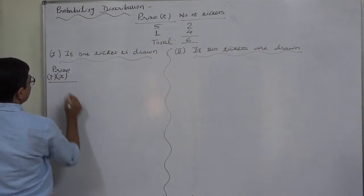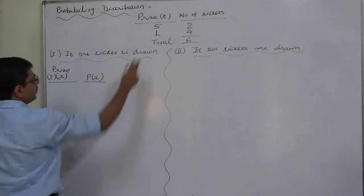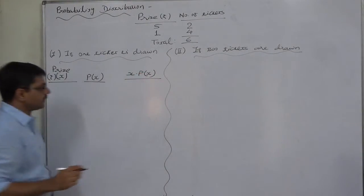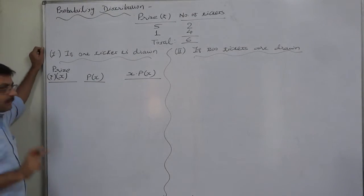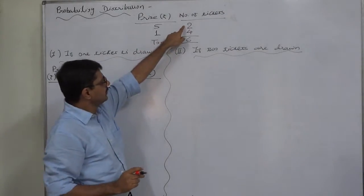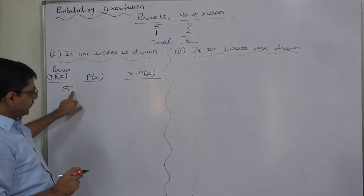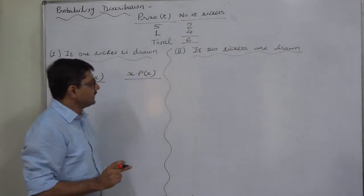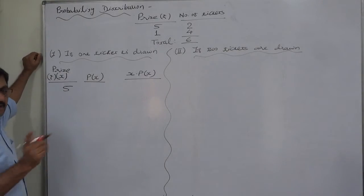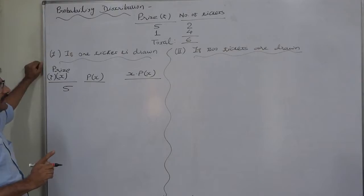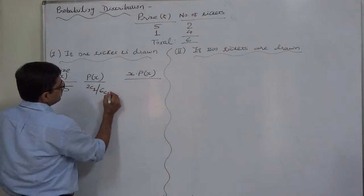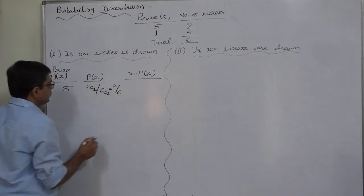We set up a table with columns: price in rupees (X), probability of X, and X into P(X) to calculate the expected value. For a prize of rupees five, there are two such tickets out of six total, so the favorable cases are 2C1, giving probability 2C1 by 6C1, which is 2 by 6.